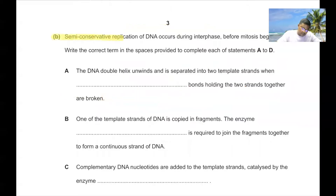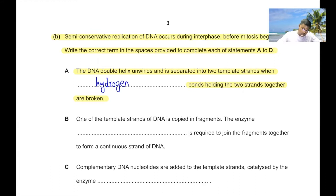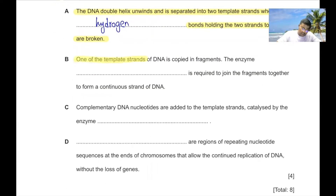Part B. Semi-conservative replication of DNA occurs during interphase before mitosis begins. Write the correct term to complete each statement. The DNA double helix unwinds and is separated into two template strands when hydrogen bonds holding the two strands together are broken. So the word will be 'hydrogen.' One of the template strands of DNA is copied in fragments.